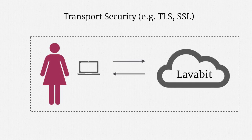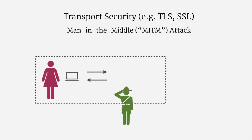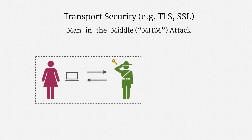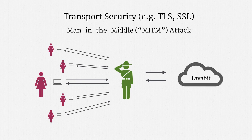The government wanted to launch a Man-in-the-Middle, or MitM, attack against Edward Snowden. The idea was that the FBI would pose as Lavabit using Lavabit's private keys. Users would think they were connecting to Lavabit, but they were actually connecting to the FBI. Then the FBI would redirect the traffic to the real Lavabit. The net effect is that the FBI would have access to data that users were sending to and receiving from Lavabit, and users would be none the wiser.